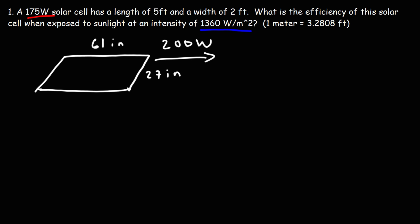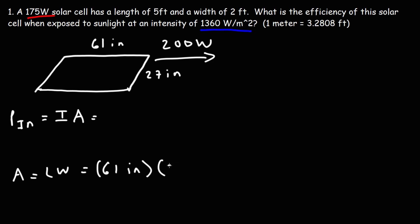For those who want access to more video content, check out the links in the description section below. Now, we're going to follow the same process as the previous problem. Area is length times width: 61 inches times 27 inches gives us 1647 square inches. Now let's convert that to square meters.